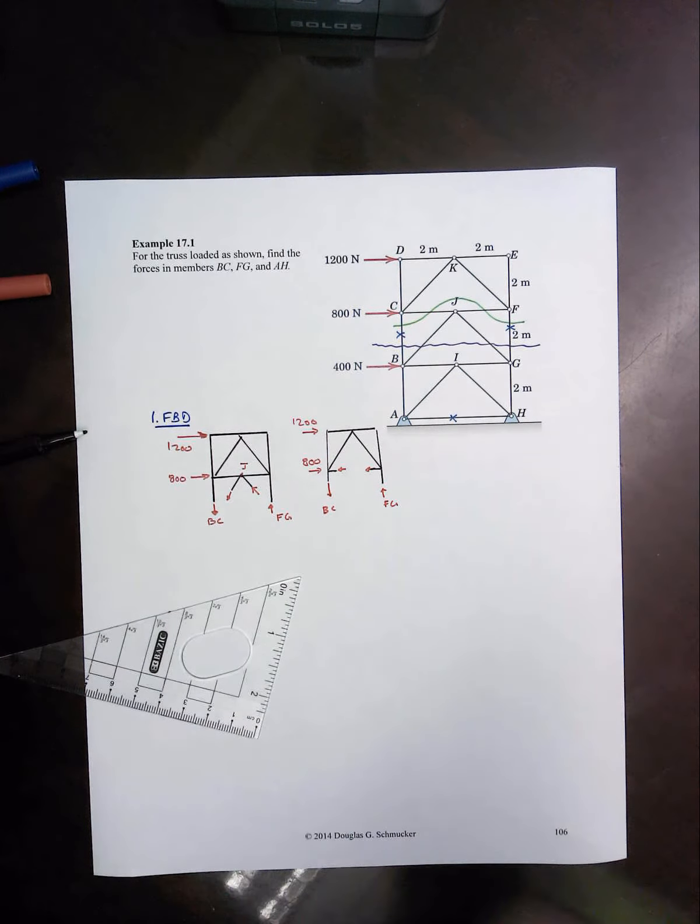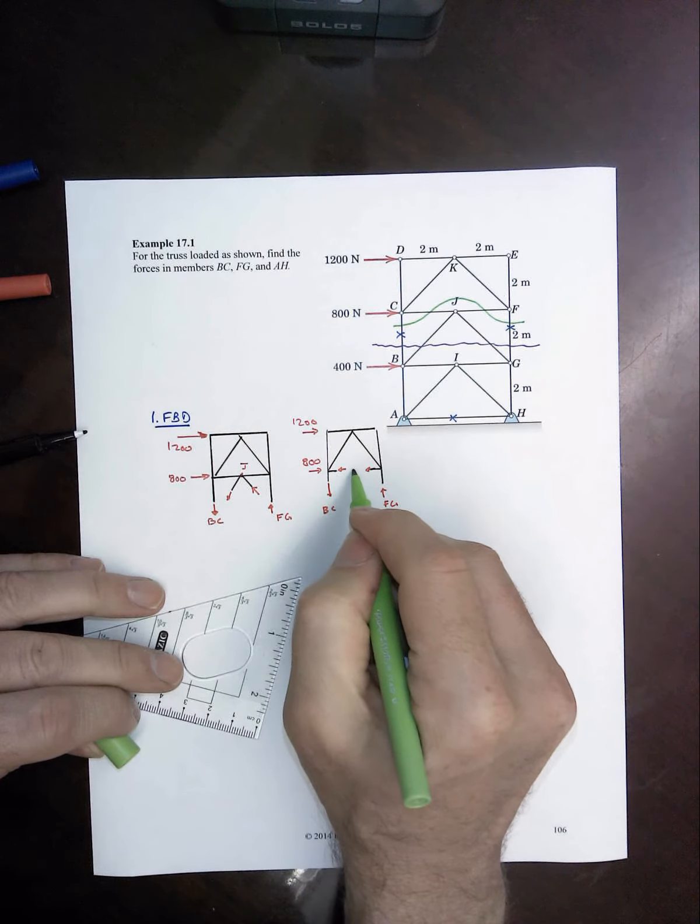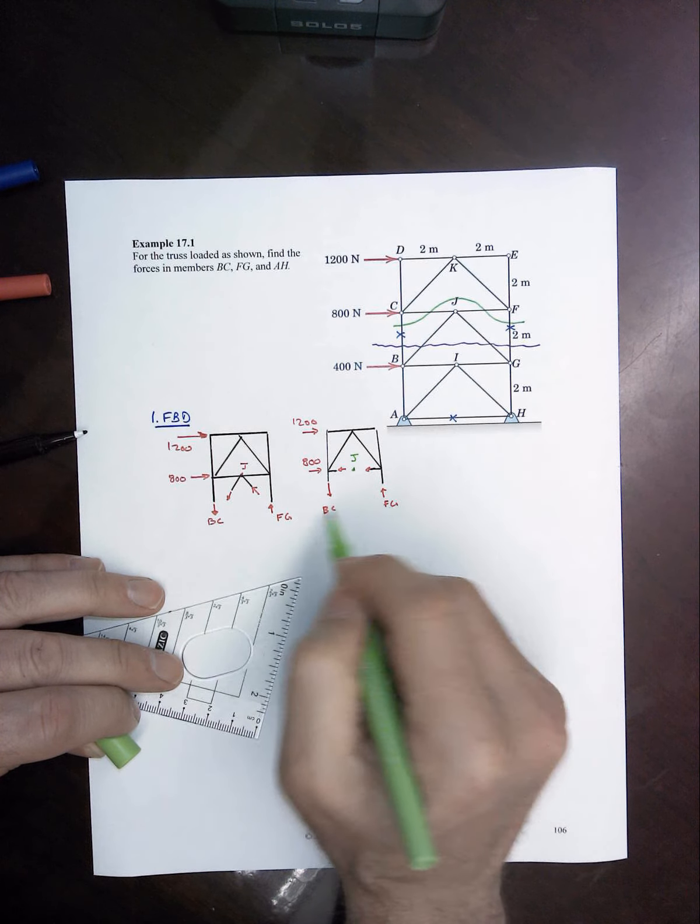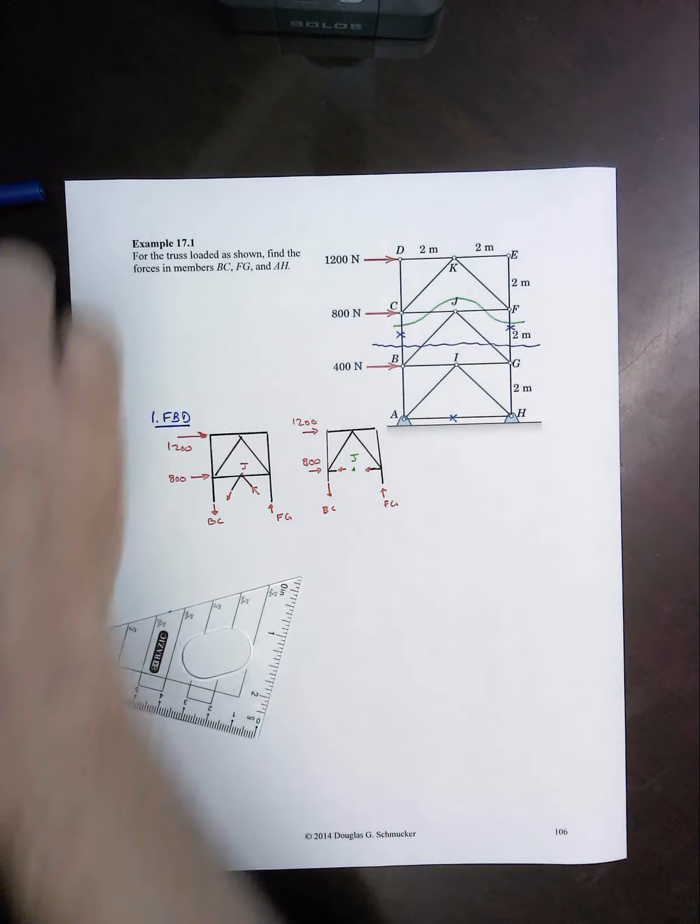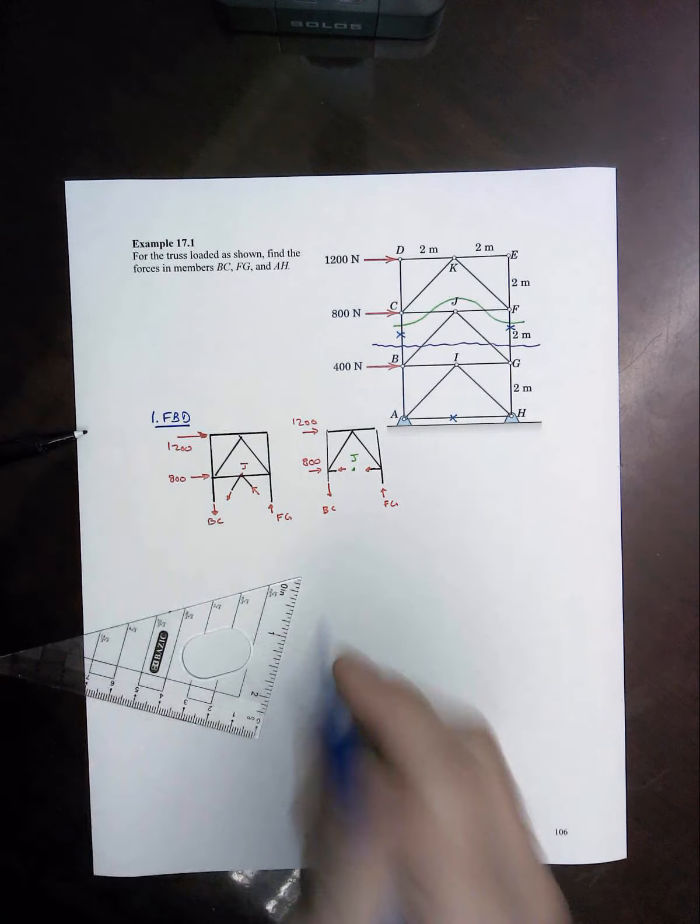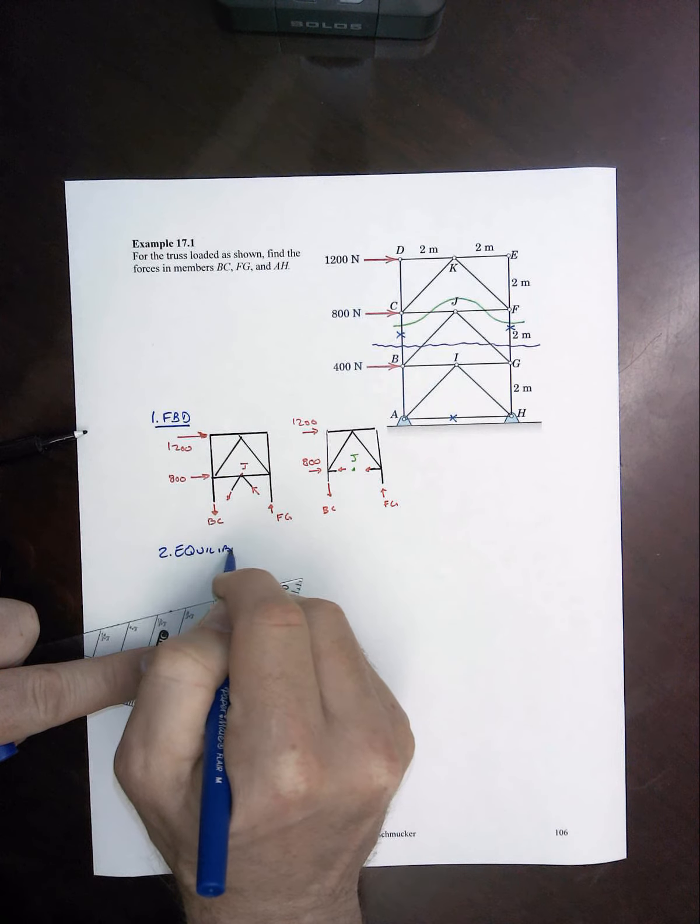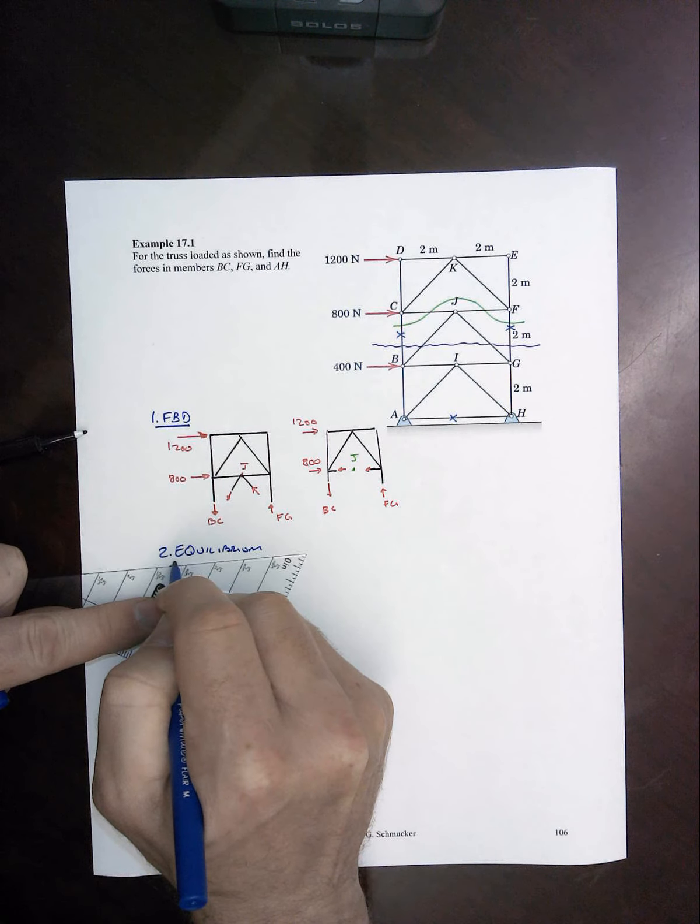But note now, that if we were to sum moments about J, yeah, okay, these horizontals go away. We still have FG and BC in there. But wow, look what happens with equilibrium.